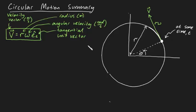It's worth noting here that the speed of the particle, simply given by lowercase v, is r omega.